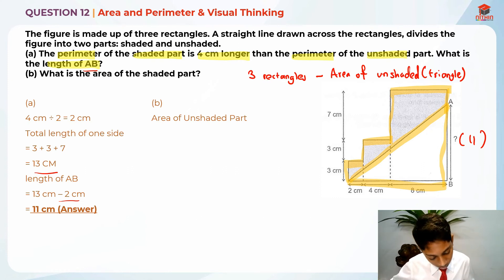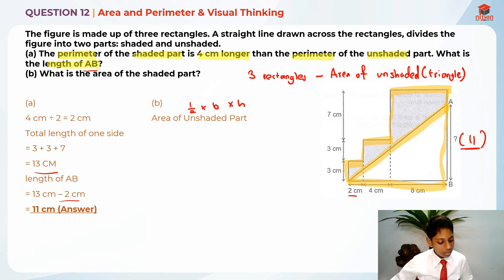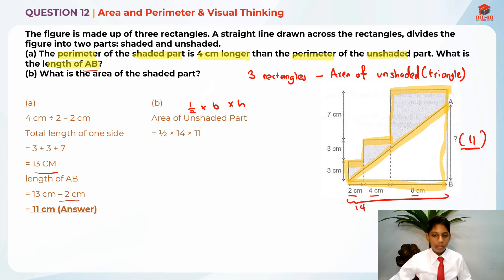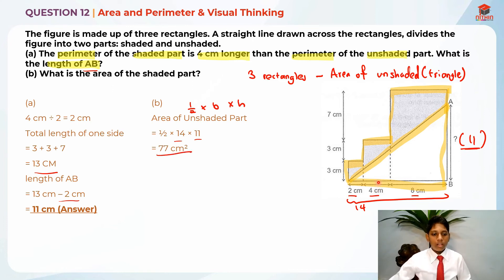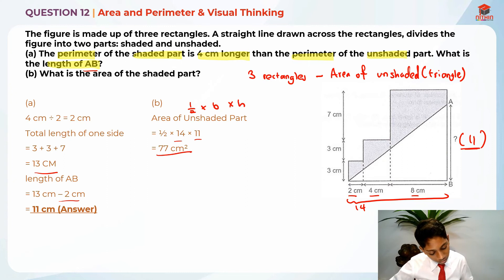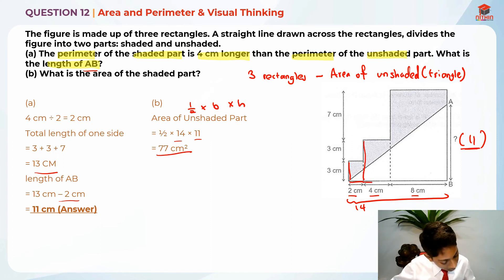So, half times base times height. The height is 11 and the base is 2 cm plus 4 cm plus 8 cm, which gives us 14 cm. Half times 14 times 11 gives us 77 cm² as the area of the unshaded part. Now we find the area of these 3 rectangles in total. The area of a rectangle is length times breadth, so I'll identify the length and breadth for each rectangle.